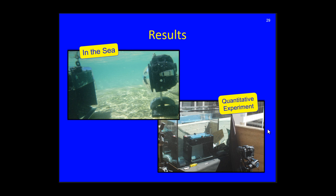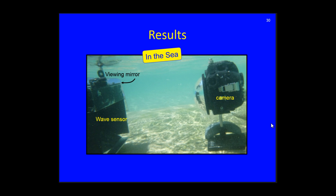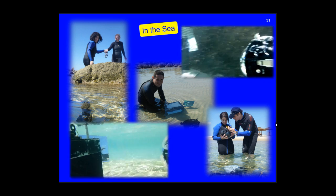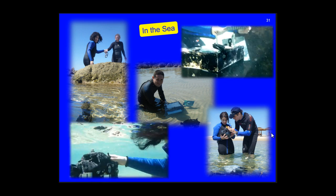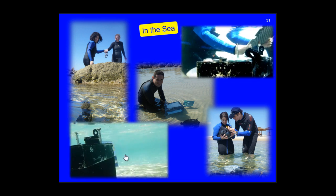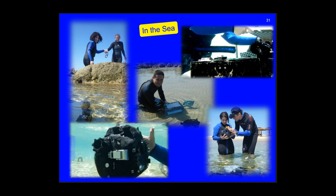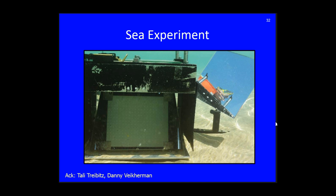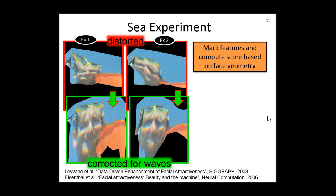We tested our system in the sea and also performed quantitative experiments in the lab. Let us start with the sea experiment. Here is the wave sensor and the viewing mirror. This is the camera that captures both. Here is the image taken by the camera capturing both the sensor and the outside image. We imaged a person standing outside.